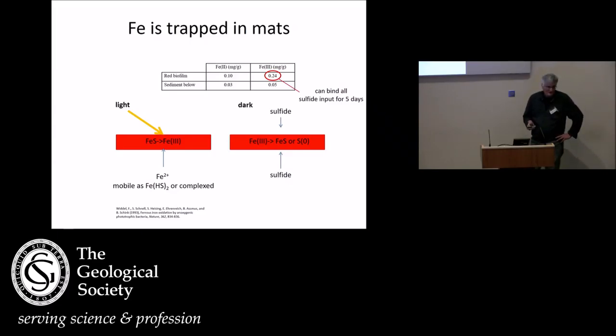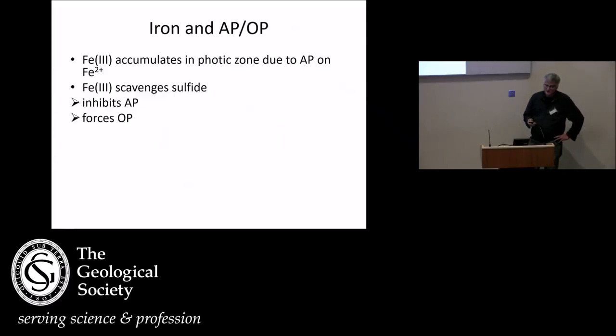And that's quite significant because this amount of iron is enough to protect or, let's say, to scavenge all influxing sulfide for several days. So if you have this situation, then the cyanobacteria cannot actually execute anoxygenic photosynthesis simply because there's no sulfide. It's scavenged away by iron.